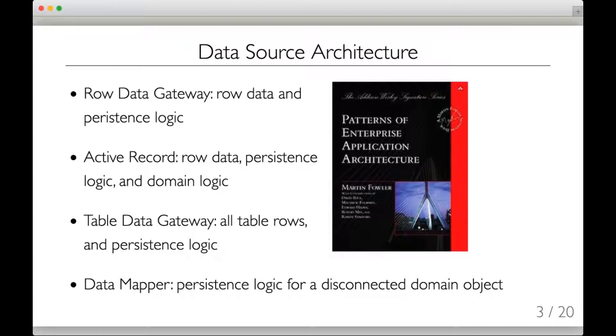Active Record, which is probably more well-known, is exactly like Row Data Gateway in that it takes the row data and persistence logic and keeps them in the same record, but it adds the ability to put in some light domain logic as well.